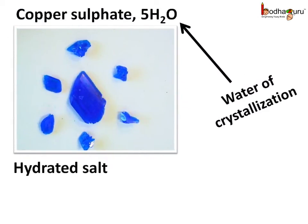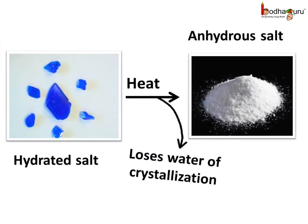Some salts can form crystals after combining with water molecules. Like copper sulphate molecules form beautiful blue crystals by combining with water molecules — each molecule combines with 5 water molecules. This water in the crystal is called water of crystallization, and such a salt is called a hydrated salt. On heating, the hydrated salt loses its water molecules and as a result it loses its shape.